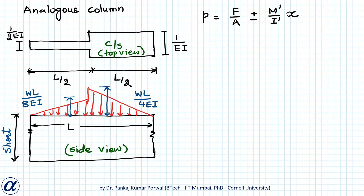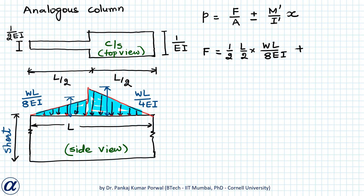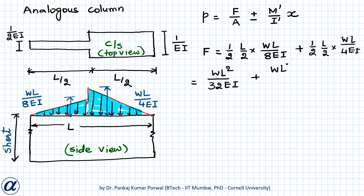First, we find force F as the area of the total distributed load. The area for the first half of the triangle is (1/2) · (L/2) · WL/(8EI), and the area for the second half is (1/2) · (L/2) · WL/(4EI). This simplifies to give F = 3WL²/(32EI).